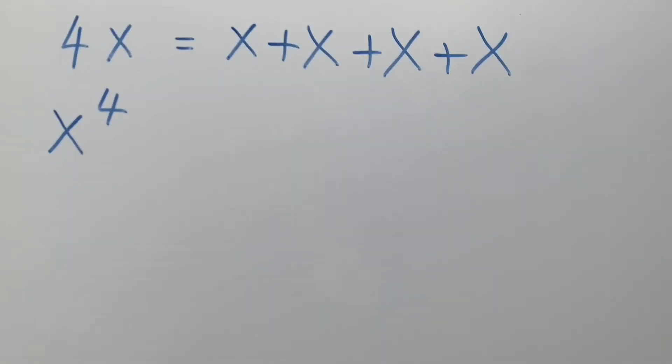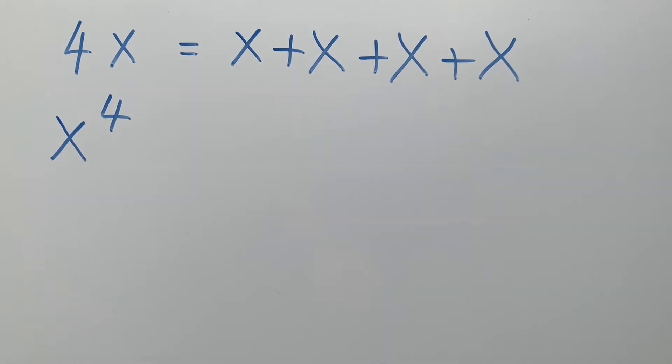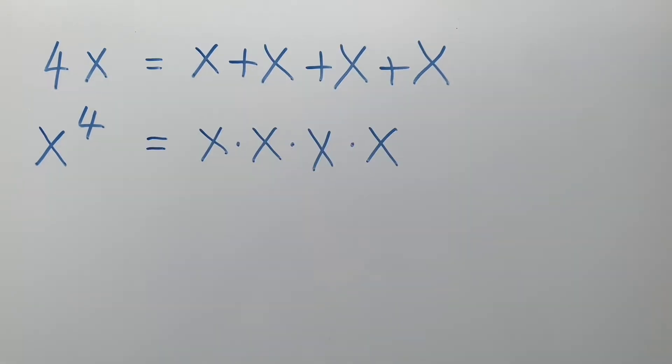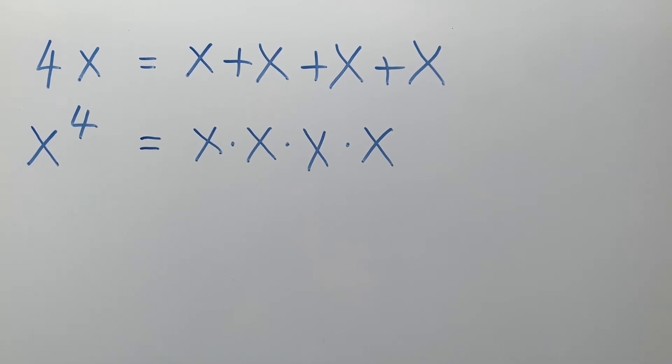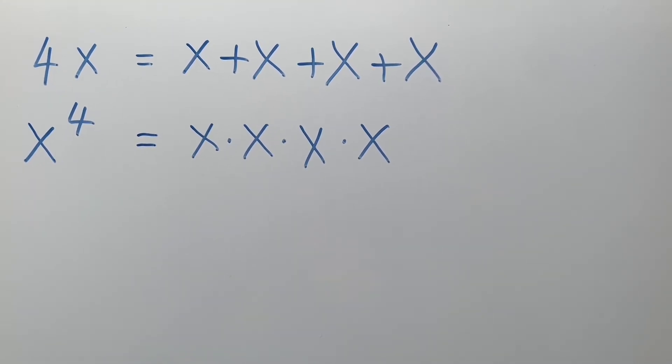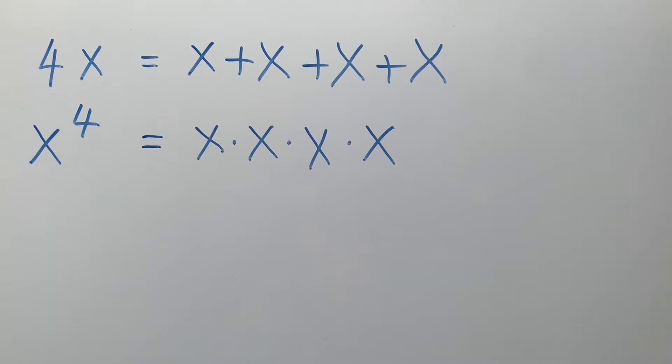But x to the 4th power is shorthand for x times x times x times x. That is, x multiplied by itself 4 times.